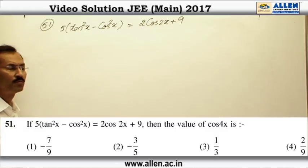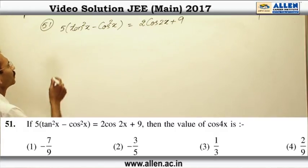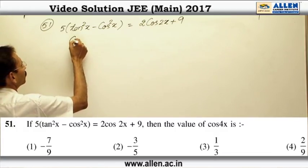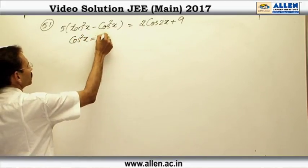Question number 51 is a routine problem of trigonometric equation. We will start this problem with considering cos square x as t.